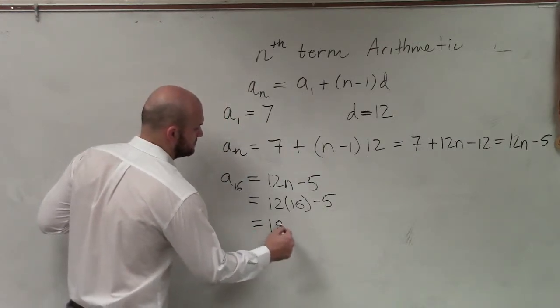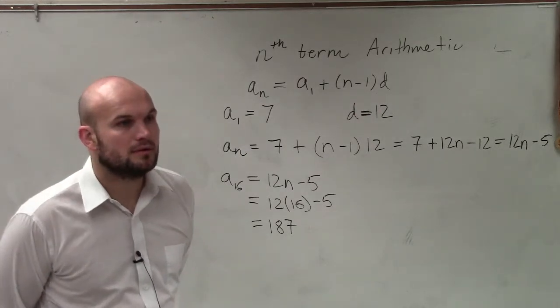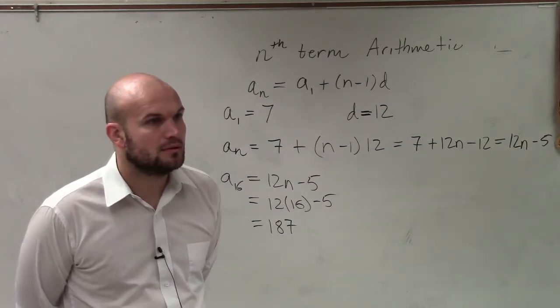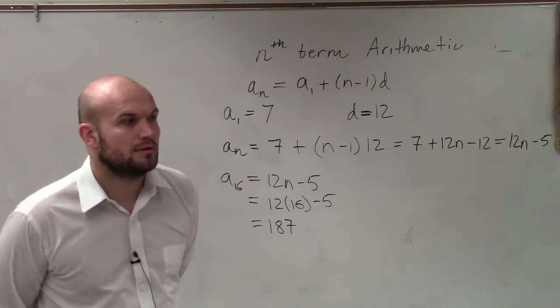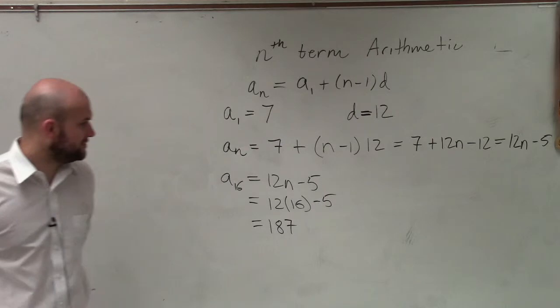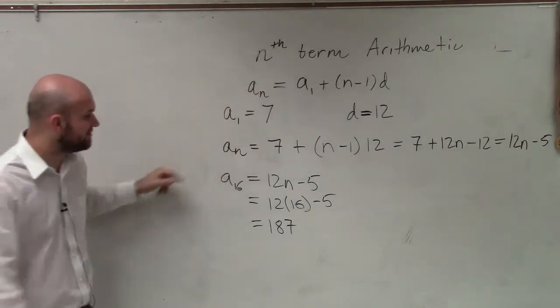I'm sorry, but the a1 plus n minus 1 times d, that makes sense to me to be like the parent formula. So why do you just plug it in to do that? Because what I'm asking you to do is find the formula for any value of a sub n, and I want it simplified.